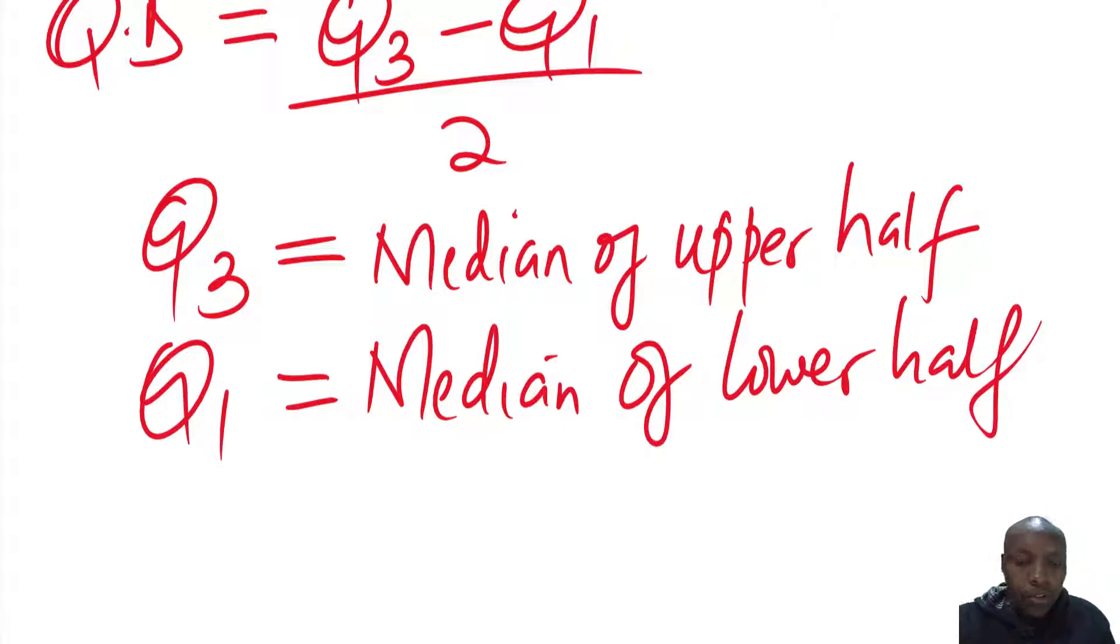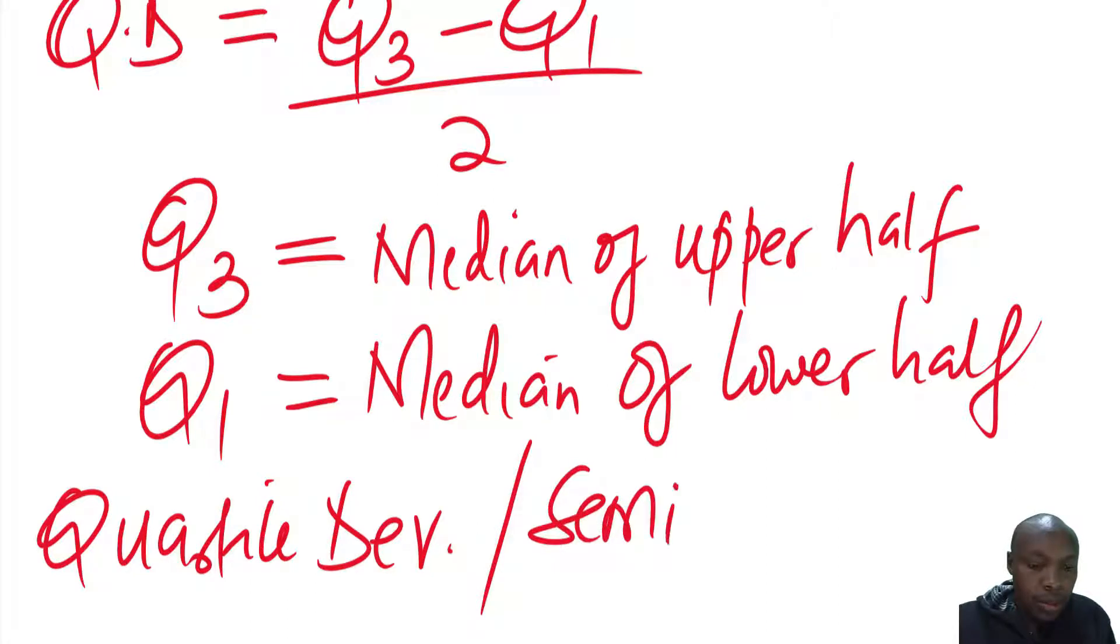So we need to identify now these Q3 and Q1. Now, another important thing to note is that quartile deviation is also referred to as semi-interquartile range. So also referred to as the semi-interquartile range. You can see we're dividing by 2.